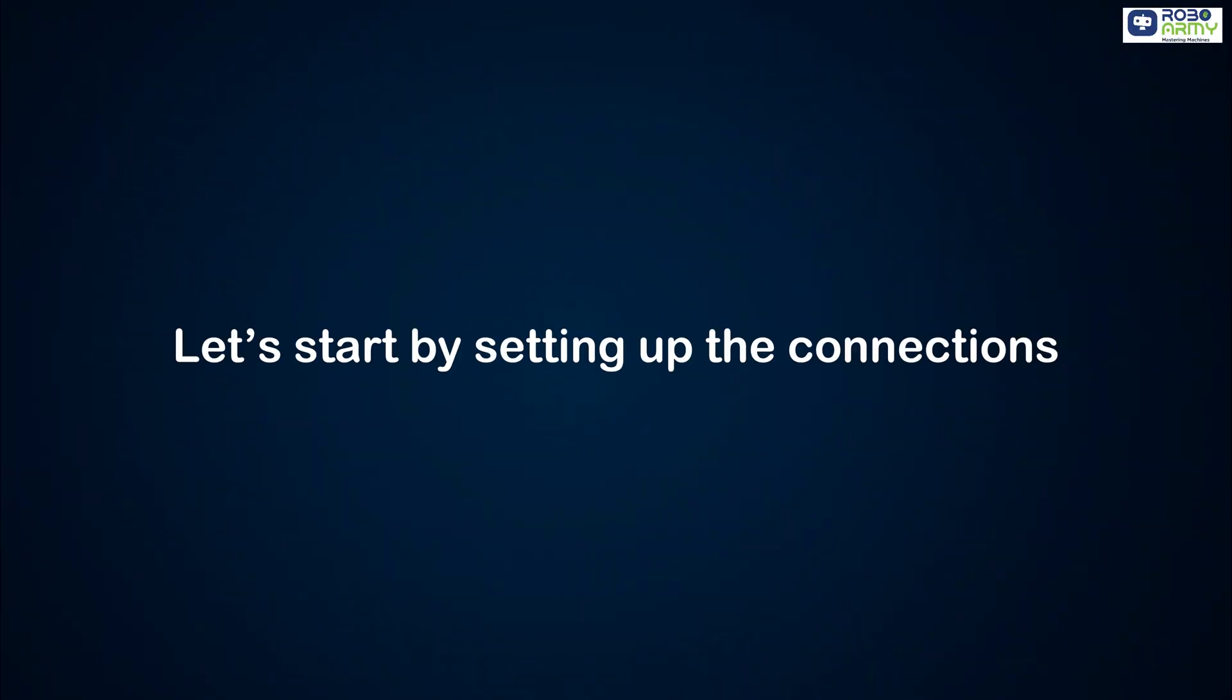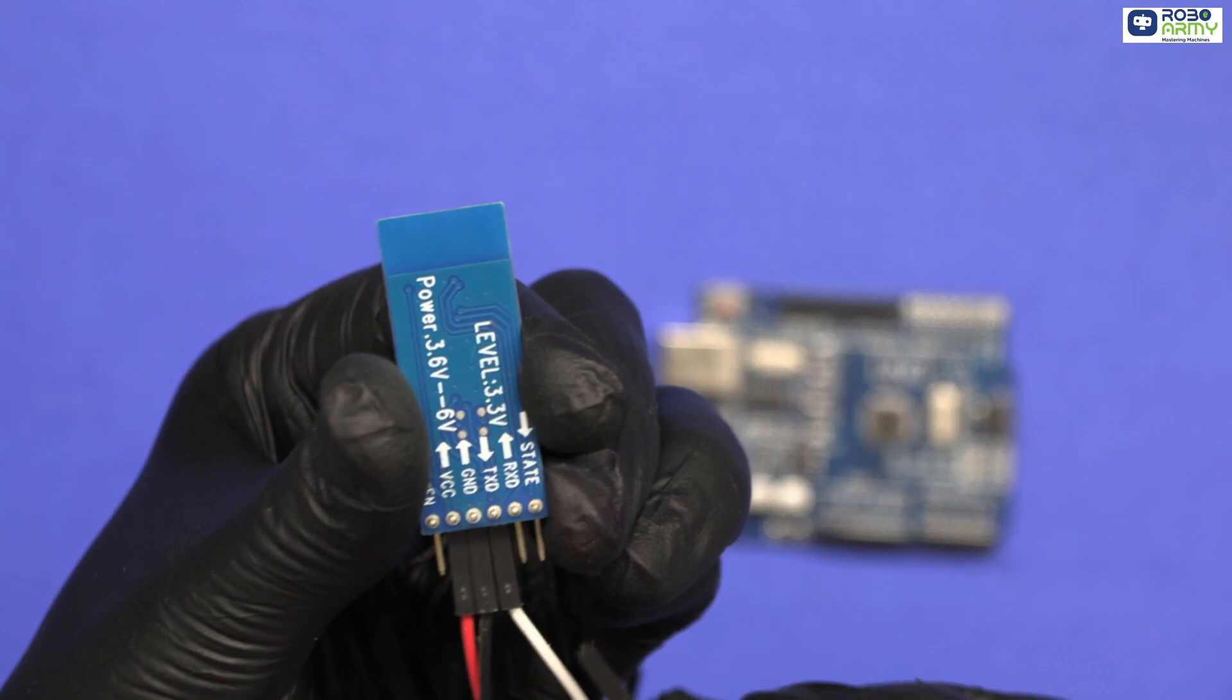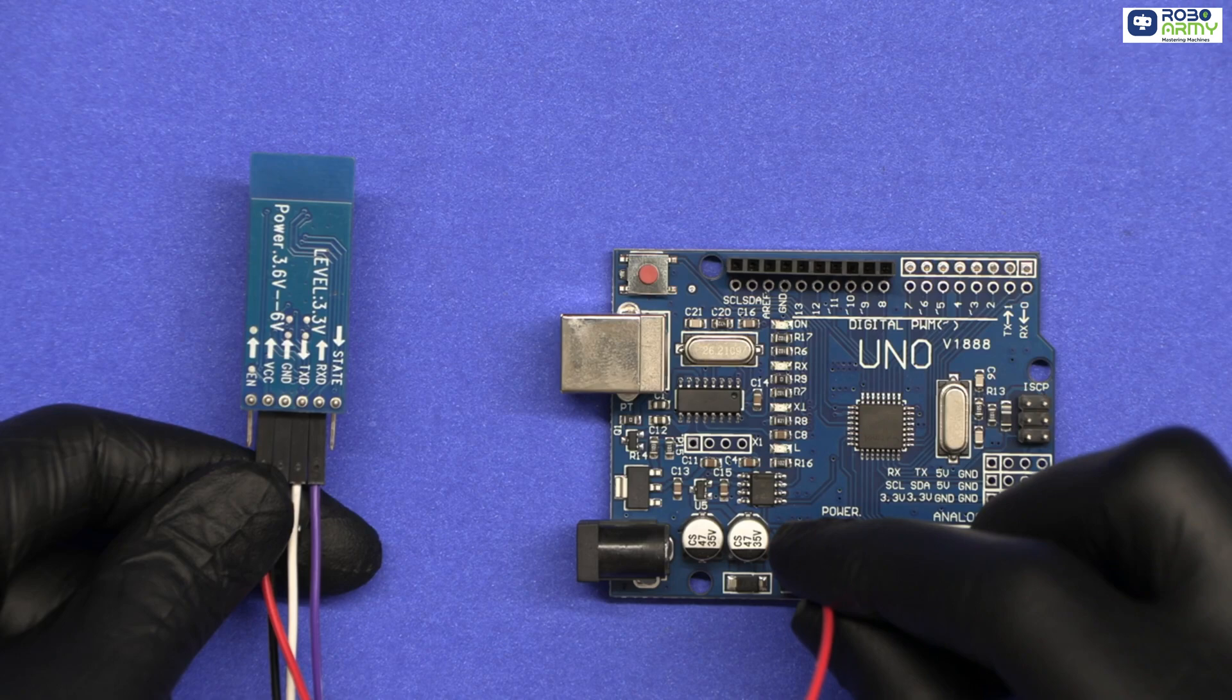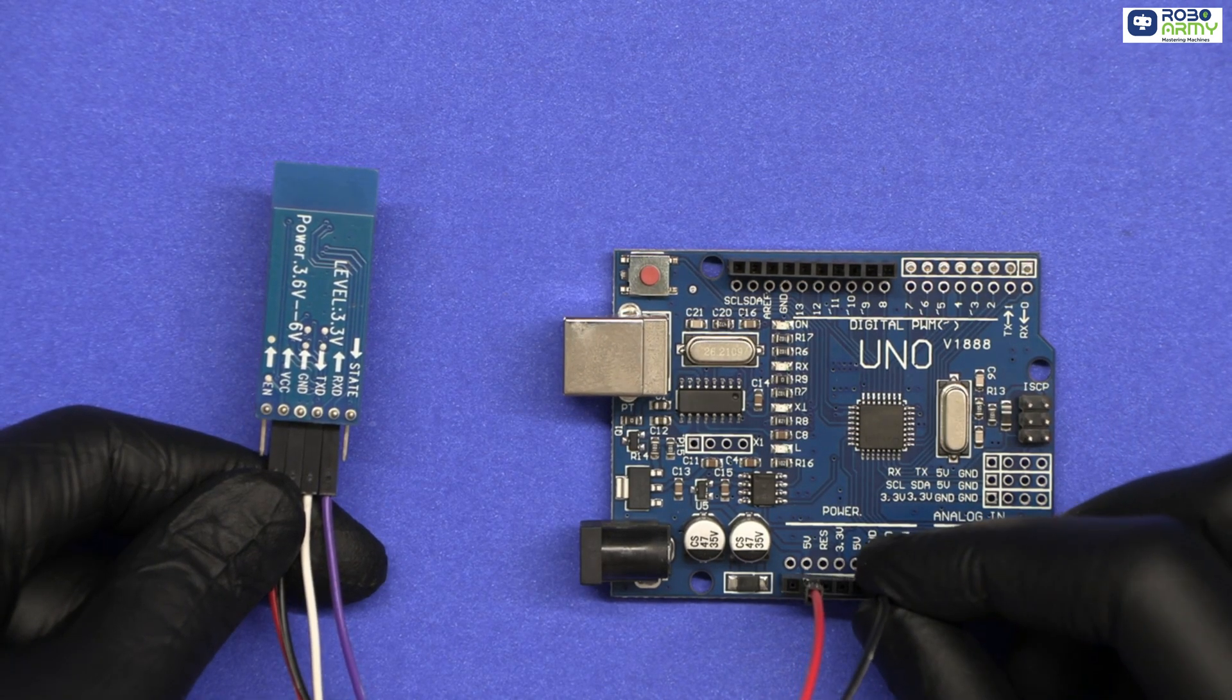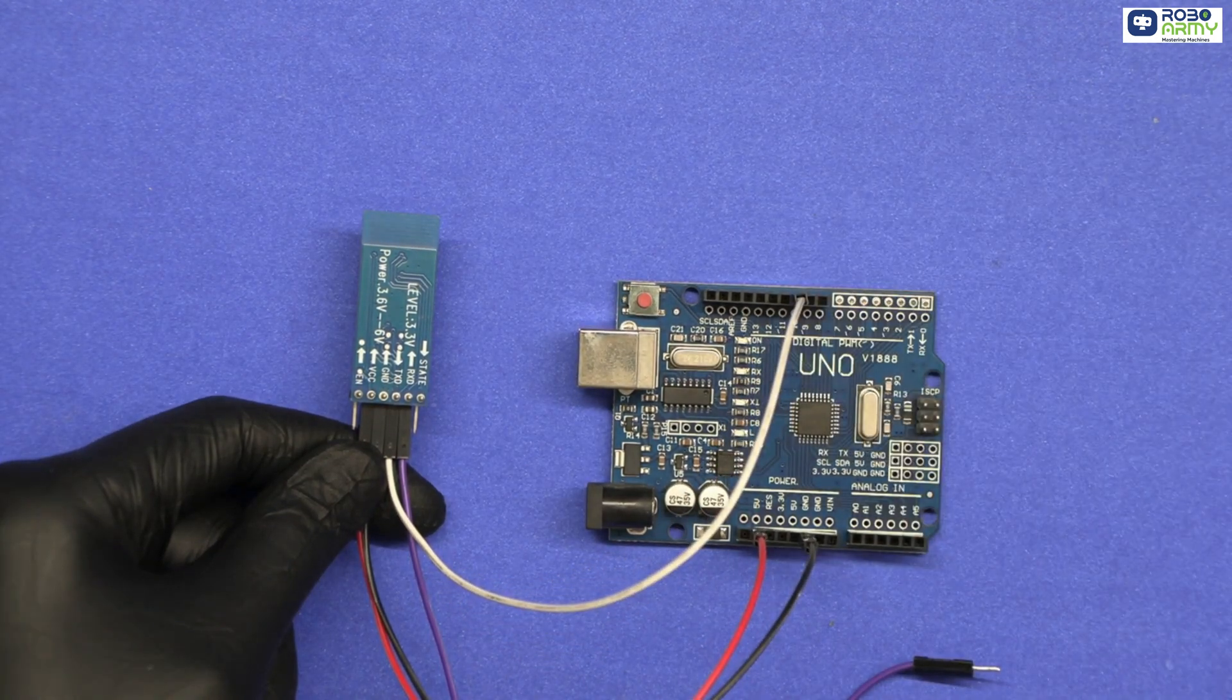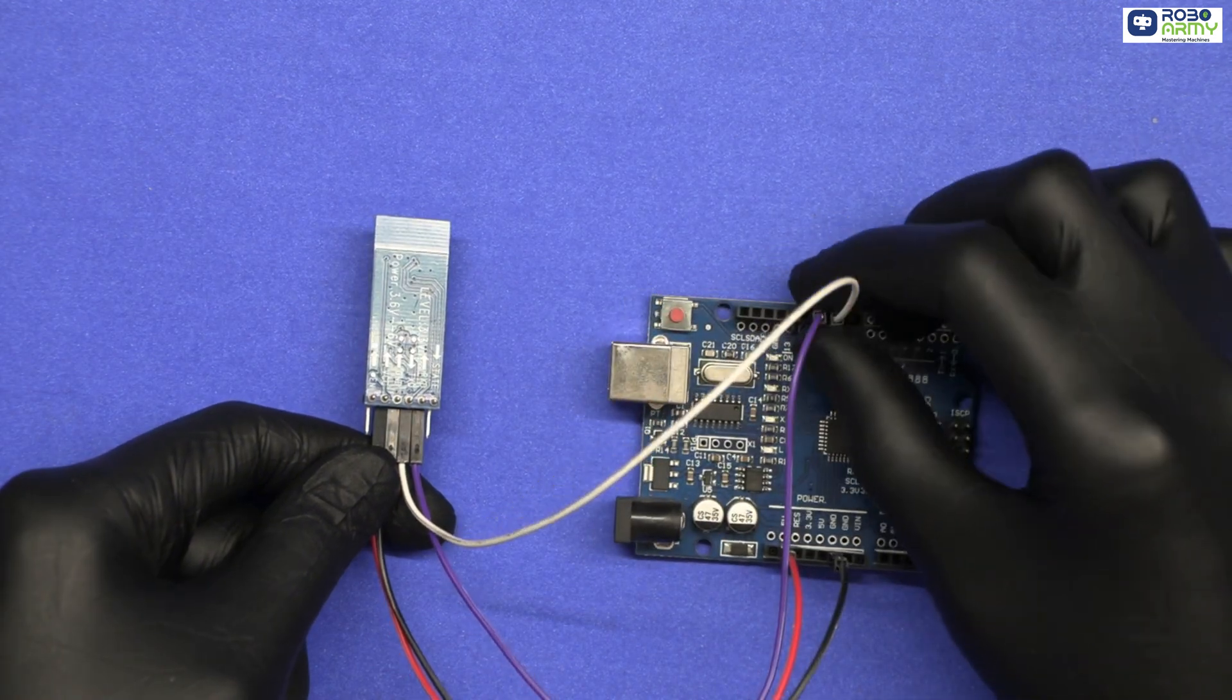Let's start by setting up the connections. Take the Arduino board. Take the Bluetooth module and connect male-to-female jumper wires in it. Connect the VCC pin of the HC05 module to the 5V pin of the Arduino. Connect the GND pin of the HC05 to the GND pin of the Arduino. Next, connect the TXD pin of HC05 to digital pin 10 of the Arduino.